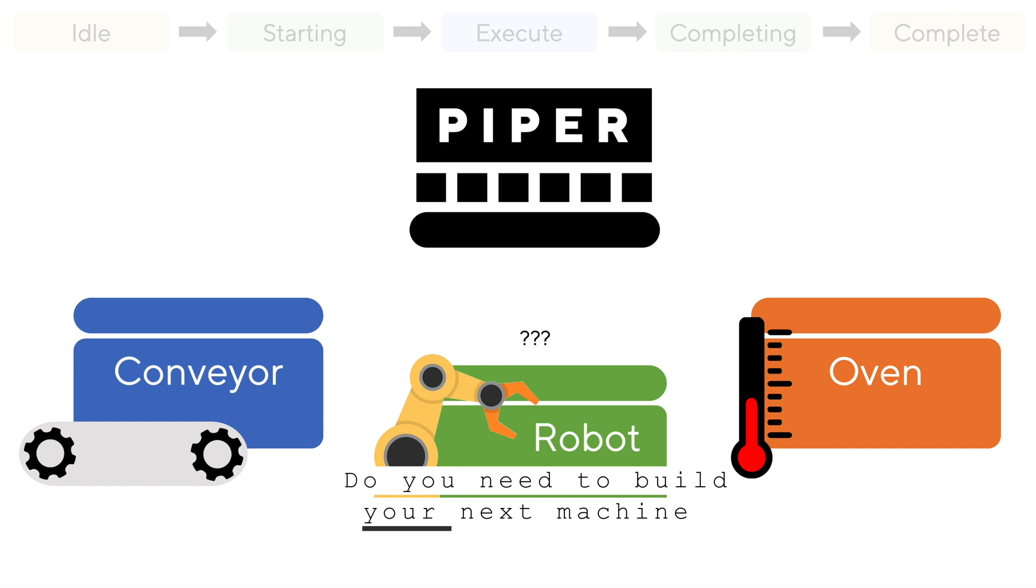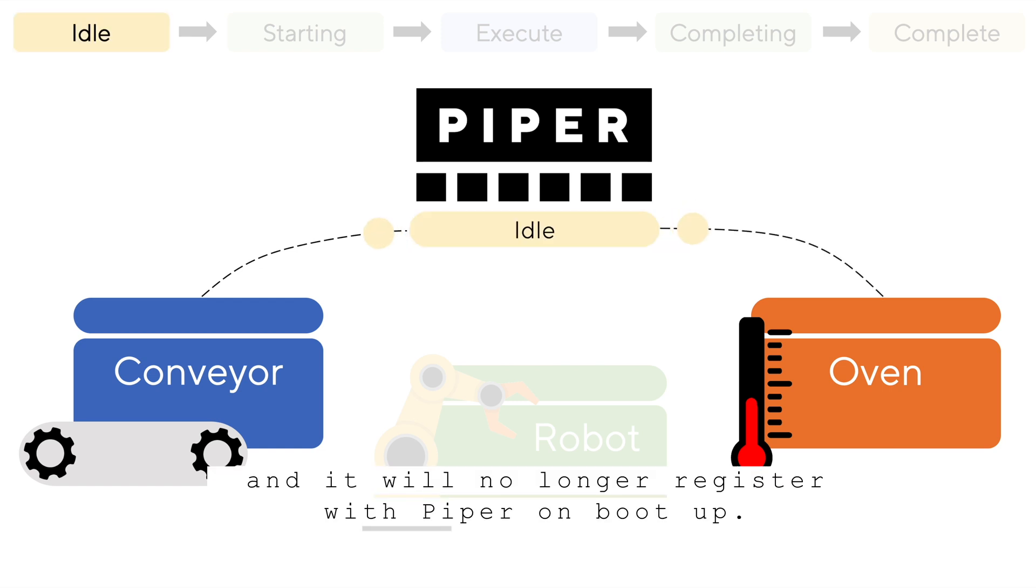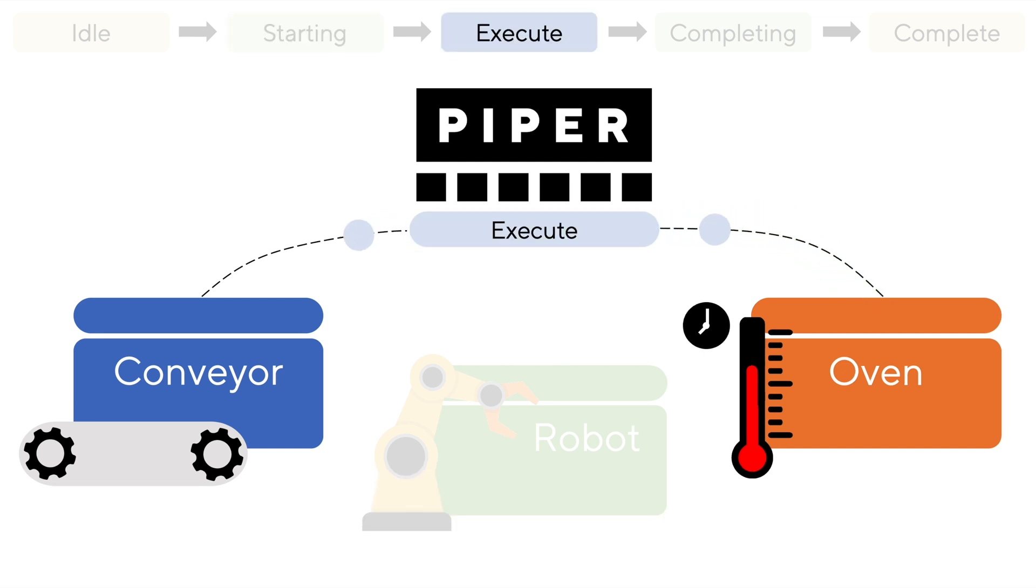Do you need to build your next machine without a robot component? No problem. Simply remove or disable the robot logic, and it will no longer register with Piper on boot up. There is therefore no broadcast channel between Piper and the robot component. Nor does Piper wait for that component's completion before moving on to the execute state. Once the two registered components are done, that is sufficient confirmation. The conveyor and oven components are not affected in any way by the robot component's absence, and as you may already have guessed, implementing a conditionally present component follows much the same approach.